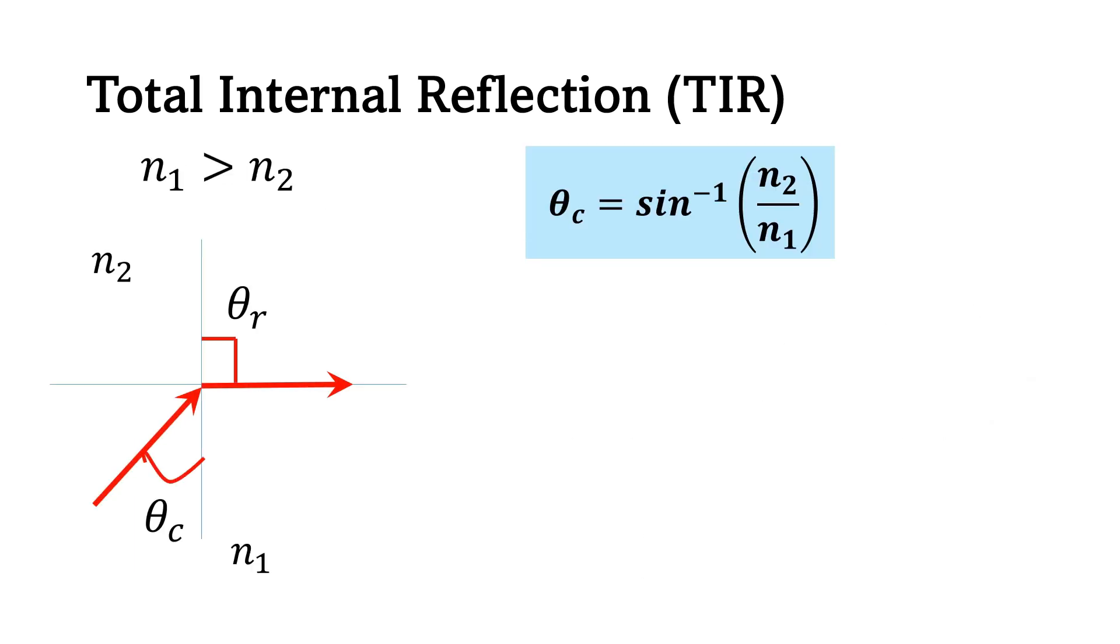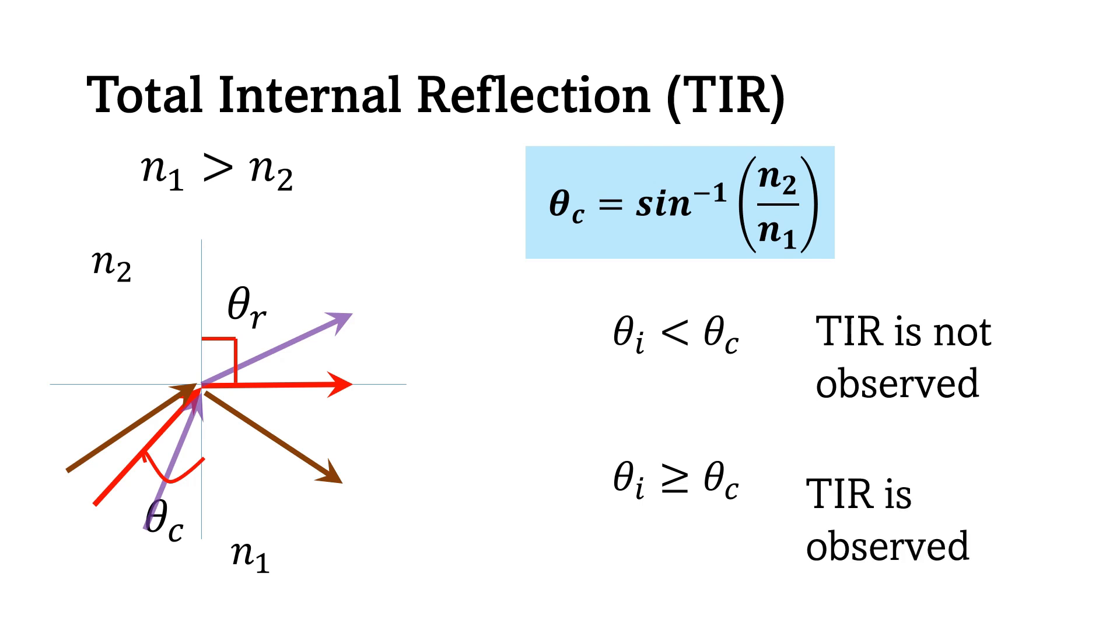If N1 is greater than N2, and incident angle is less than the critical angle, total internal reflection is not observed. If incident angle is greater than the critical angle, total internal reflection is observed.